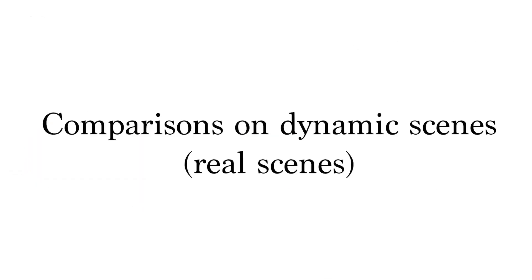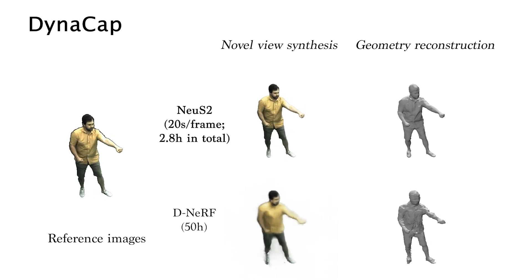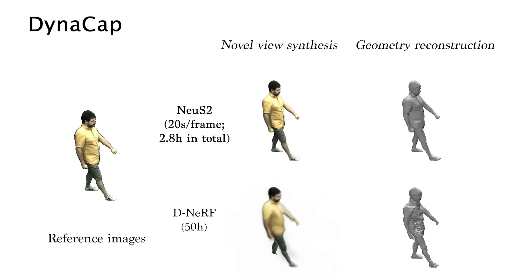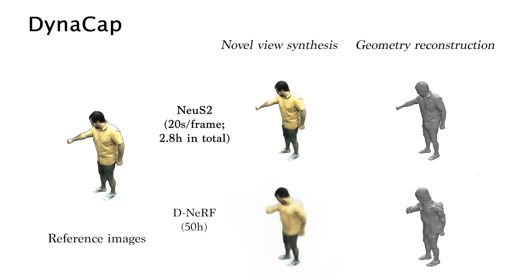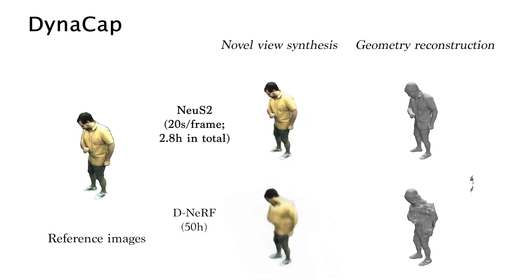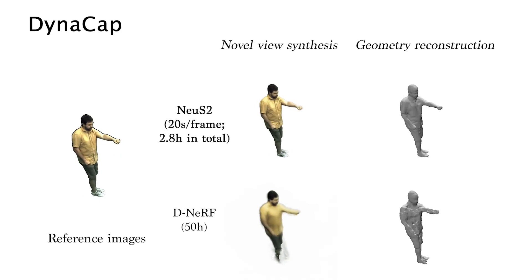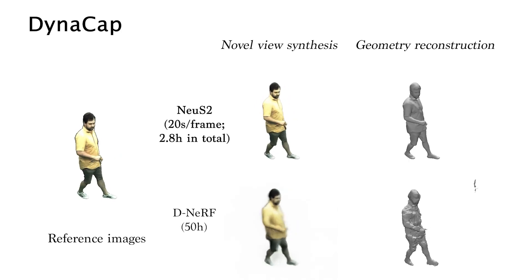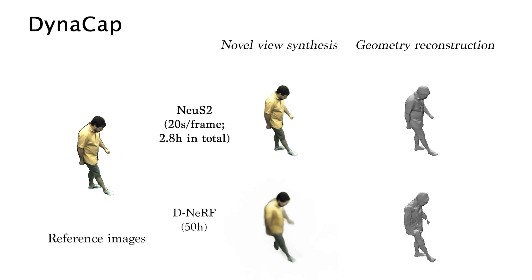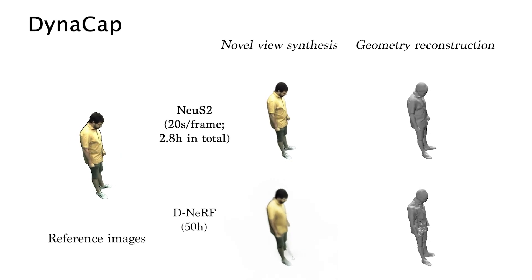Here we show the results of real scenes. For a long sequence with 500 frames consisting of challenging movements, D-NERF struggles to reconstruct it and shows blurry rendering results and inaccurate geometry reconstruction, even though it is trained for about 50 hours. In contrast, NuS2 produces photorealistic renderings and detailed geometry with only 20 seconds of training time per frame.